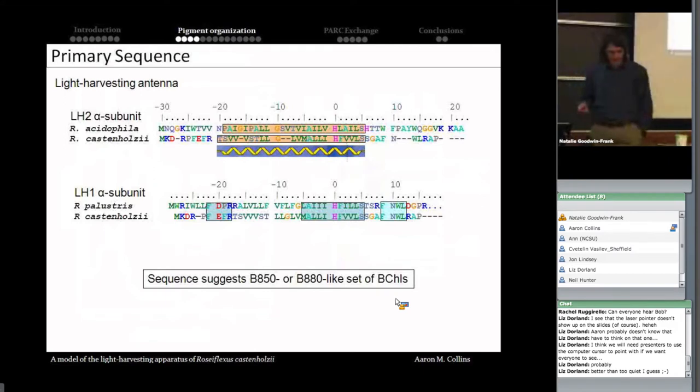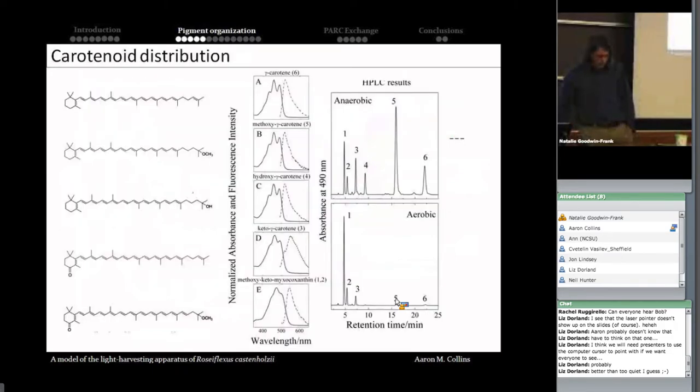Again, this histidine is responsible for coordinating the bacteriochlorophyll molecule, as well as several other regions which have a fair bit of homology. So from the primary sequence level, we can see that there is similarity to both LH2 and LH1. And from this, we can sort of suggest that there might be a B850 or B880-like set of bacteriochlorophylls. We can repeat this for the beta subunit, but it's really not necessary. We see the same trend, that there is similarity to both LH2 and LH1 amino acid sequences. So after we can purify the complex, one of the first things we did was extract all the pigments from it and actually try to identify what pigments were in the LH-RC complex. Using very crude extinction coefficients, we can estimate that there's about three bacteriochlorophyll molecules for every two carotenoids. And of the carotenoids, we get a very broad distribution, mainly being derivatives of gamma-carotene here on the top, but also a very strange carotenoid known as methoxy-keto-myxol-2'-fucoside.